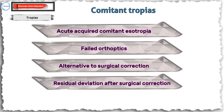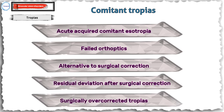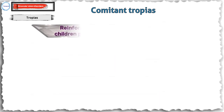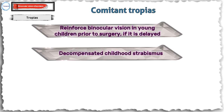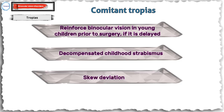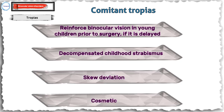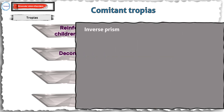Other indications include residual deviation following surgical correction, surgically over-corrected tropias, to reinforce binocular vision in young children prior to surgery if it is delayed, diplopia due to decompensated childhood strabismus or skew deviation. Cosmetic indications involve the use of an inverse prism — that is, the base is directed towards the side of the deviation — in patients with a moderate tropia and poor visual prognosis for binocular vision or unwillingness for surgery.